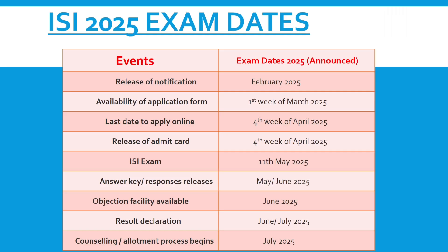ISI 2025 Exam Dates: The notification will be released in February 2025. The application form will be available in the first week of March. The last date to apply is the fourth week of April. The admit card will also be released in the fourth week of April. The ISI exam will be conducted on 11th May. The answer key will be released in May or June. The objection facility will be available in June. Results will be declared in June or July, and counselling will begin in July.